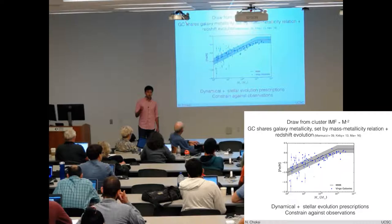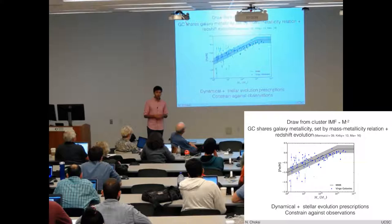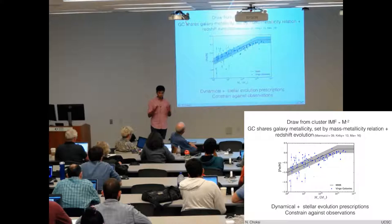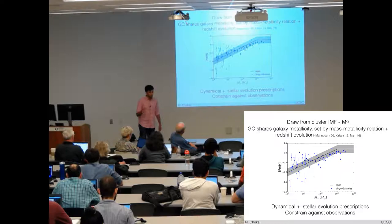Almost the entire model relies on empirical observed scaling relations. Then, given a population of clusters, we just evolve them using prescriptions for both stellar evolution and dynamical evolution for the local tidal field and two-body relaxation. In an average sense, we don't have any spatial information in this model. Evolve them up to redshift zero. Constrain our just two free parameters against metallicity and mass distributions. And we're done.